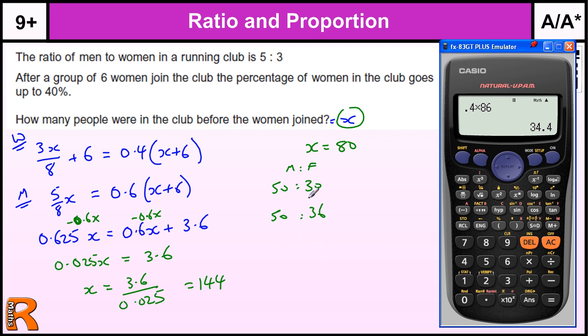So we need to try a bigger value, maybe double it, 160. So from 160 we'd have 100 to 60. And that goes up to 66.